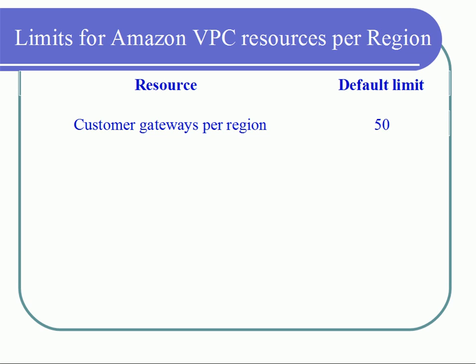Speaking about the customer gateway per region, you can create up to 50 customer gateways. These customer gateways are used to establish a VPN connection between AWS VPC and the on-premises network, so that you can interconnect your on-premises network with the Amazon cloud network.